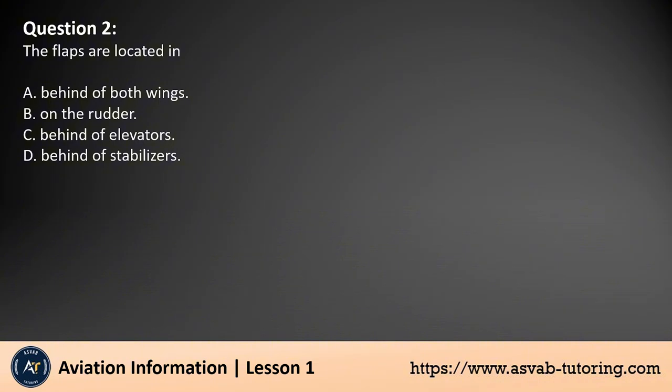Question 2. The flaps are located in: A. Behind of both wings. B. On the rudder. C. Behind of elevators. D. Behind of stabilizers.